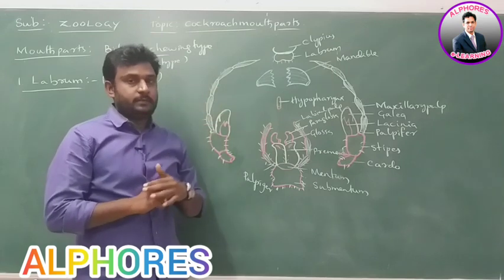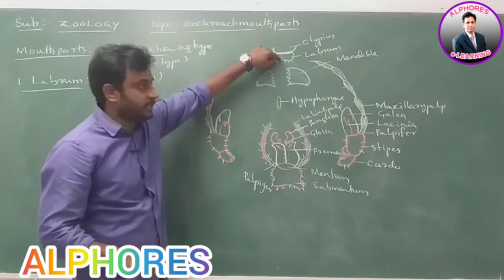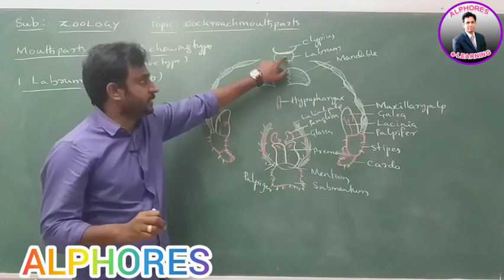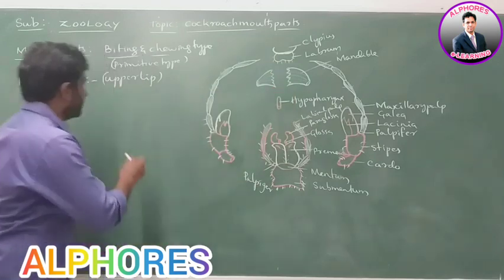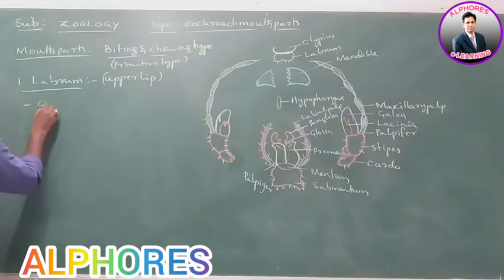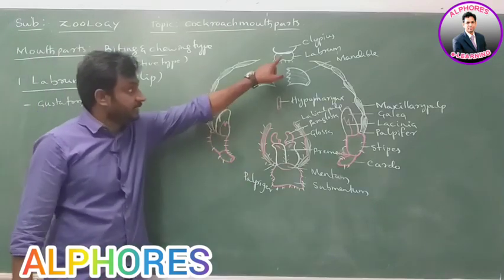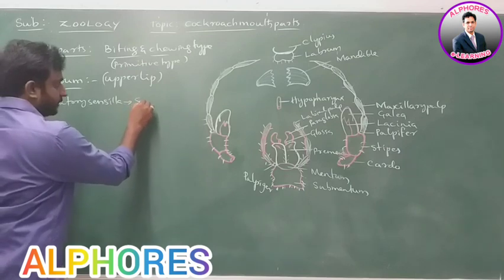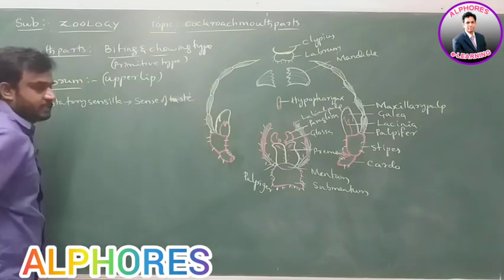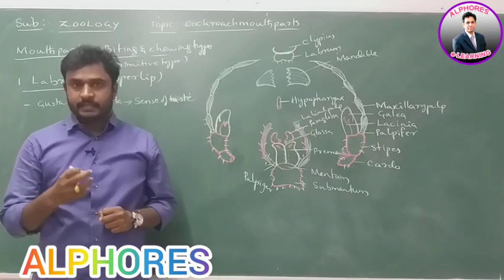The rectangular plate is called clypeus, and to the clypeus one triangular plate is attached which is called labrum. So labrum is a triangular plate present at the upper side, attached with the clypeus. Labrum consists of some sensilla which are called gustatory sensilla. Gustatory sensilla are useful for the sense of taste — that is the function of labrum, tasting of food materials.